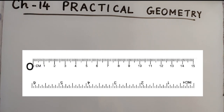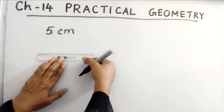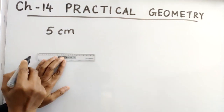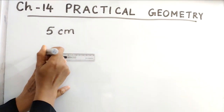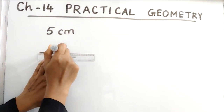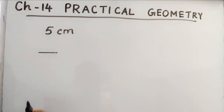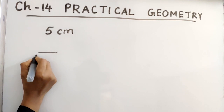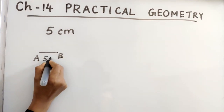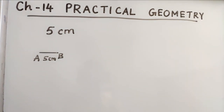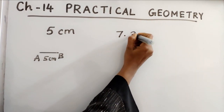We must start from 0. For example, for 5 cm, we start from 0 and draw till 5. This is a 5 cm length, and we can name it as AB.